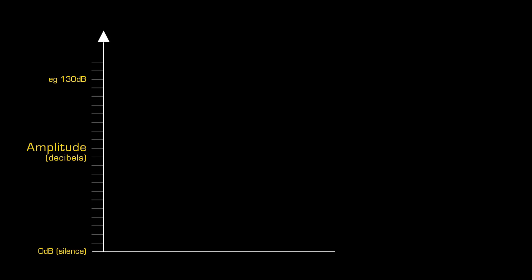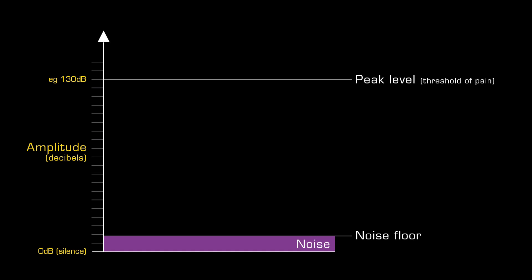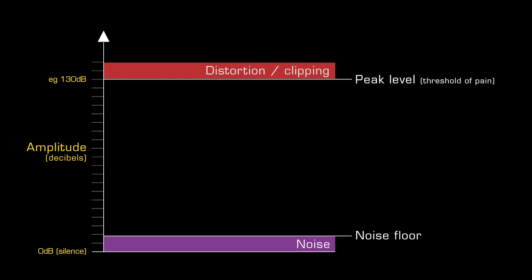We can draw a simple diagram showing the theoretical lower limit of human hearing, or silence, at 0 decibels, the noise above that, peak level and the threshold of pain, and distortion and clipping above that. The noise element is known as the noise floor. Our auditory dynamic range is between the peak level and the noise floor.